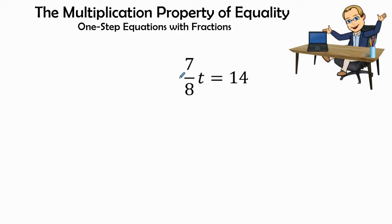Now, when I get rid of this fraction, I'm going to multiply it by its reciprocal, which is going to be 8 over 7. And what I do on the right side, I'm going to multiply 14 by 8 over 7. Yes, and you're right. I'm going to go ahead and put the 14 over 1, because I'm going to create this whole number into a fraction.